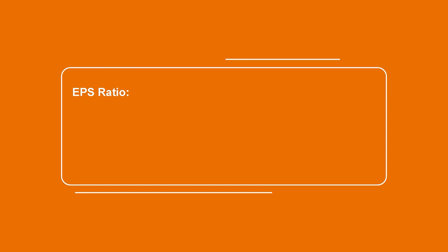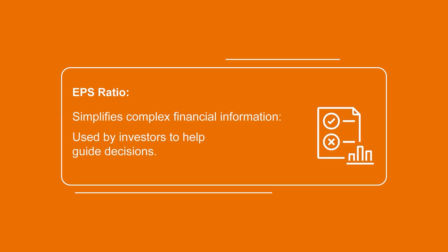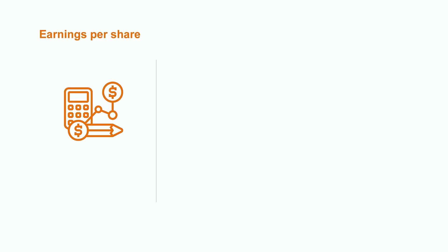Have you ever tried to make a decision but there was just too much data to comprehend? Maybe you were trying to decide on moving to a new city, buying a car, or enrolling in a new degree. To come to a decision you likely needed to do some research and analysis. The same goes for investors when they're looking to make difficult decisions about where to invest their money. They need a way to simplify complex financial information, and one way they can navigate this maze of information is by using ratios such as earnings per share.